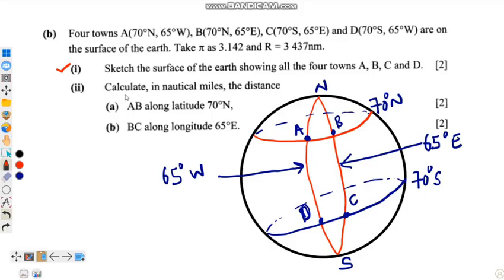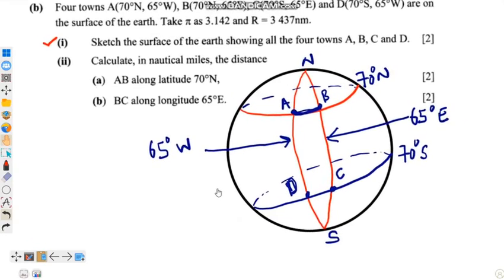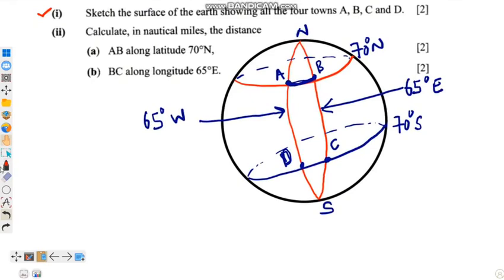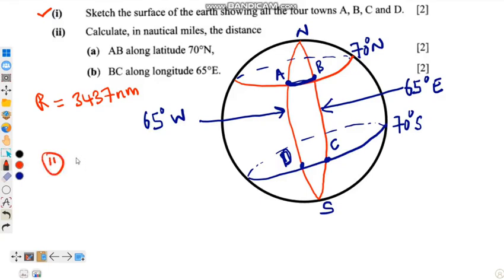Question (ii) asks us to calculate in nautical miles the distance AB along latitude 70 degrees north. To find the distance along a line of latitude, since the radius of the earth is given in nautical miles, we use the formula: distance AB = θ × 60 × cos(x).